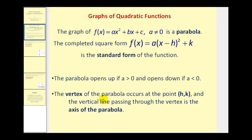Also, the vertex of the parabola occurs at the point (h, k), and the vertical line passing through the vertex is the axis of the parabola, or axis of symmetry.